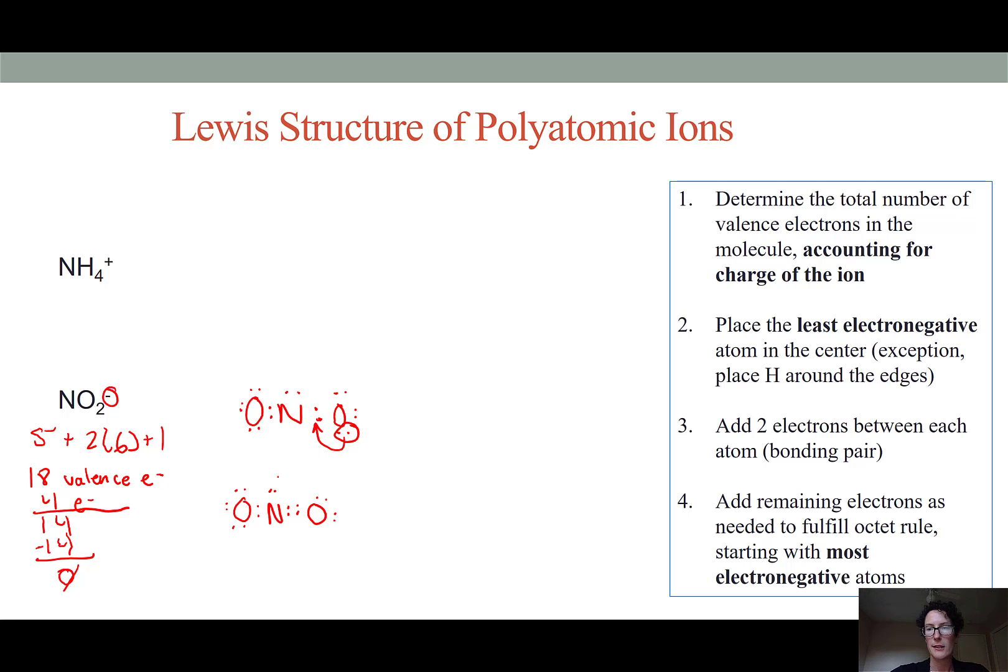Now to clean this up by replacing my bonding electrons with lines, I have my single bonded oxygen, then my nitrogen with its single lone pair, and then my double bonded oxygen with 2 lone pairs. Again, I'm going to put the whole thing into nice square brackets and indicate that there is a negative charge on this molecule.